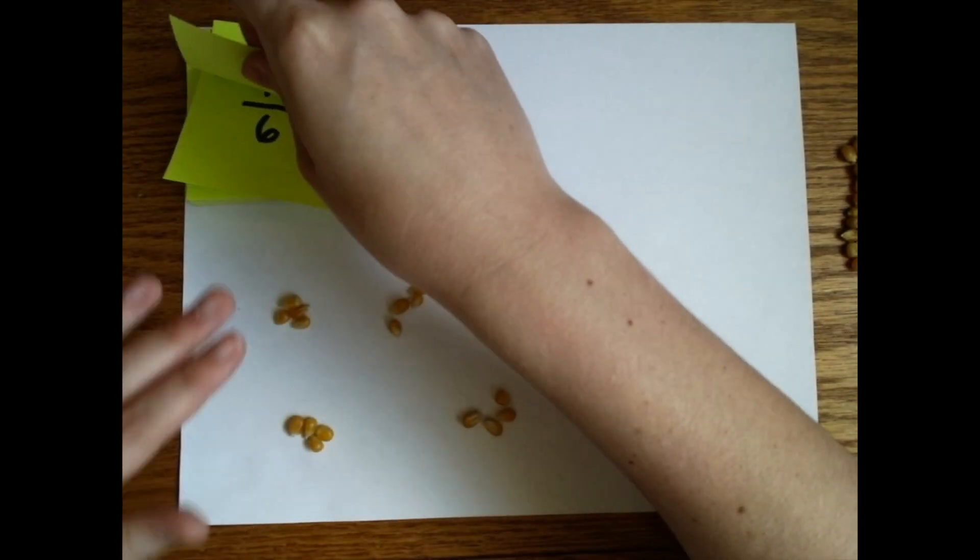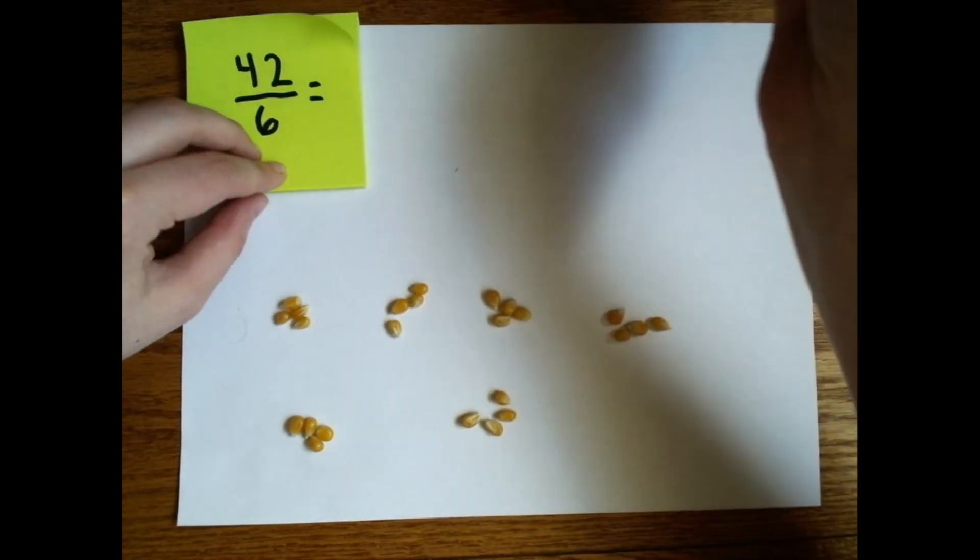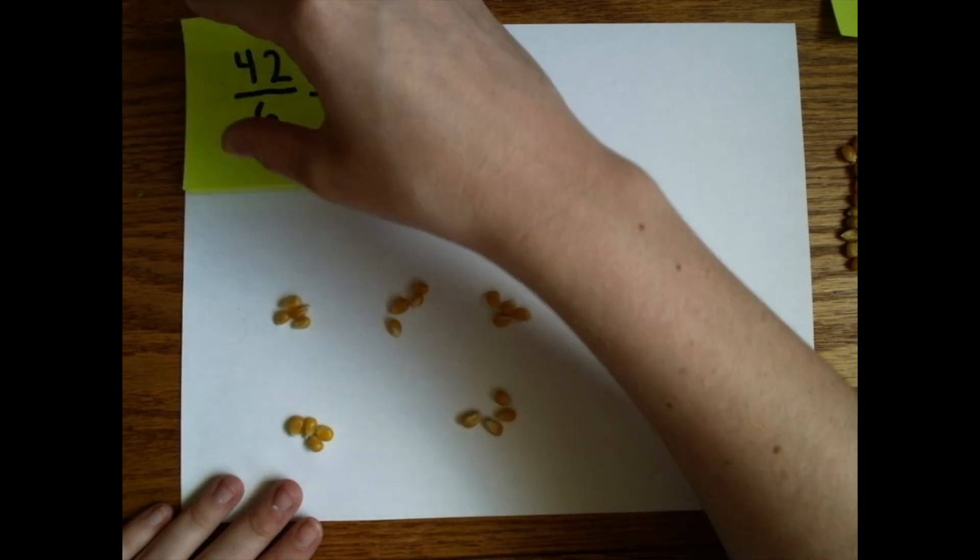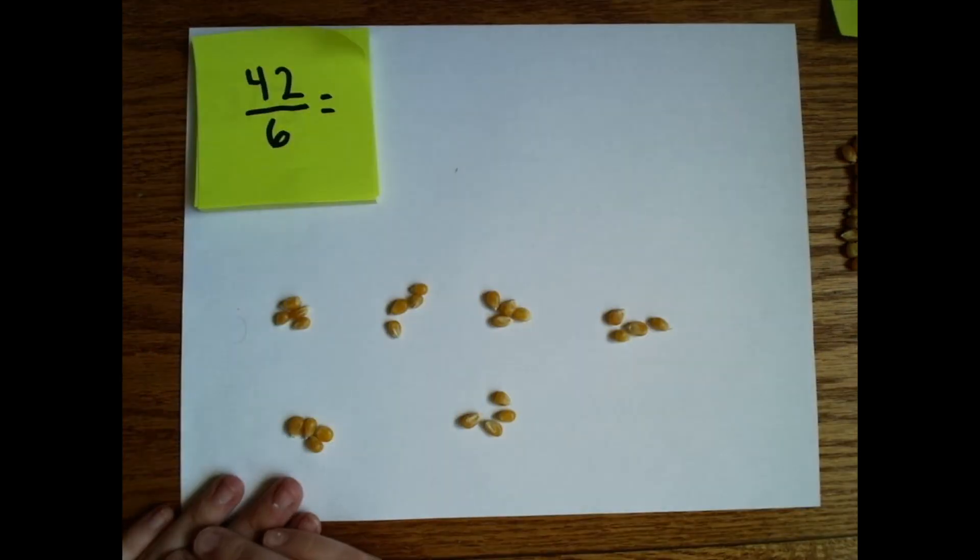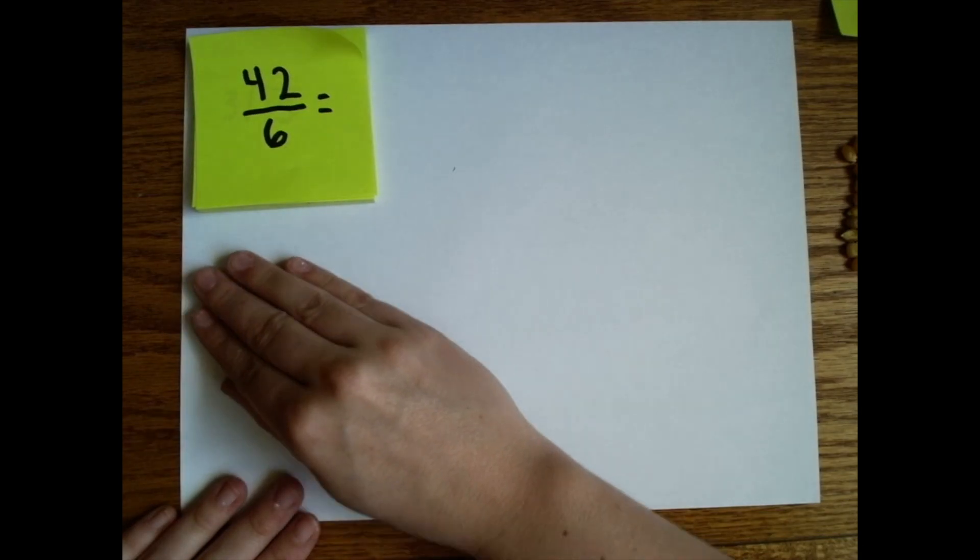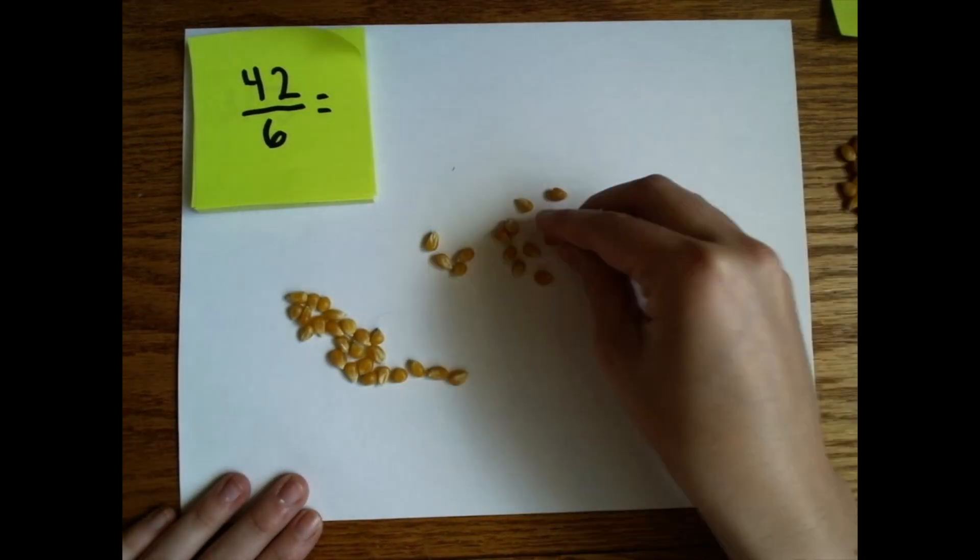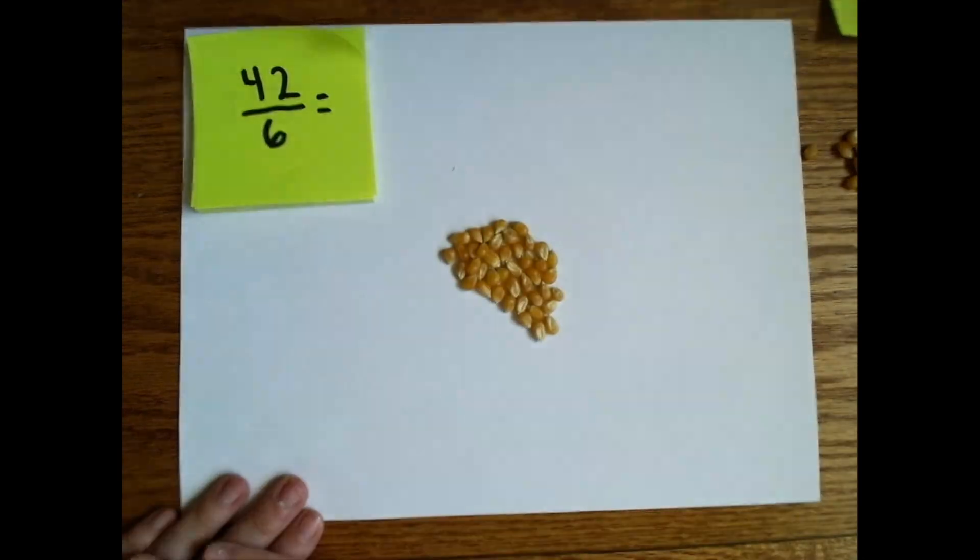We're going to do another one. This time I wrote it a little bit differently. We did 42 divided by six. This is kind of where it looks like a fraction. And so we know this is 24. I'm going to quickly add some more to get to 42. All right. So now I have 42.